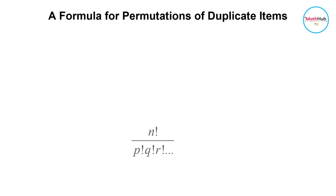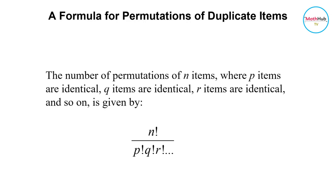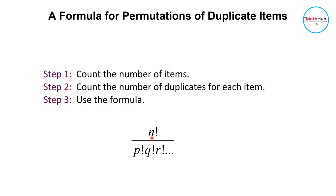The following is the formula for permutation of duplicate items. You will use this formula if you want to count the number of ways of permutation of n items, where among n, p of the items are identical, q items are identical, r items are identical, and so on. The formula is equal to n factorial divided by p factorial, q factorial, r factorial, and so on.